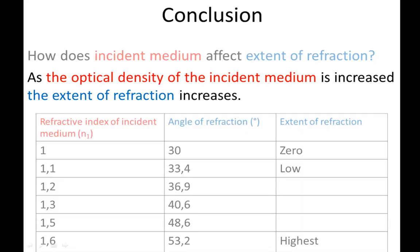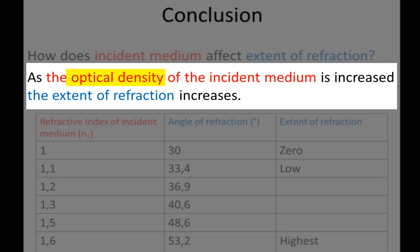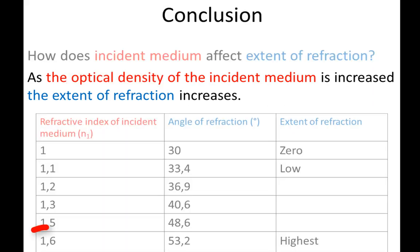We can word this in another way: as the optical density of the incident medium is increased, the extent of refraction increases. Remember, optical density can also be seen as how difficult that medium is for light, and the refractive index tells us how much slower light travels through that medium than through a vacuum. So the higher the number, the slower the light travels — the more difficult the medium. When n1 is 1.6, that's a very difficult, very optically dense medium, and for the more optically dense medium, we see a higher degree of refraction occurring.